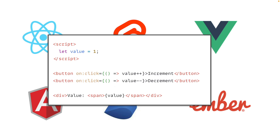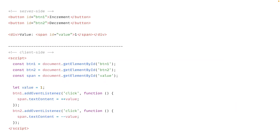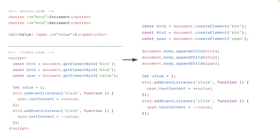Since the framework is creating the elements themselves, unlike previously, we don't need IDs to find elements and attach event listeners. Since we create them together, the framework does all of it — we already have a reference to the elements we just created, so we can immediately attach event listeners.